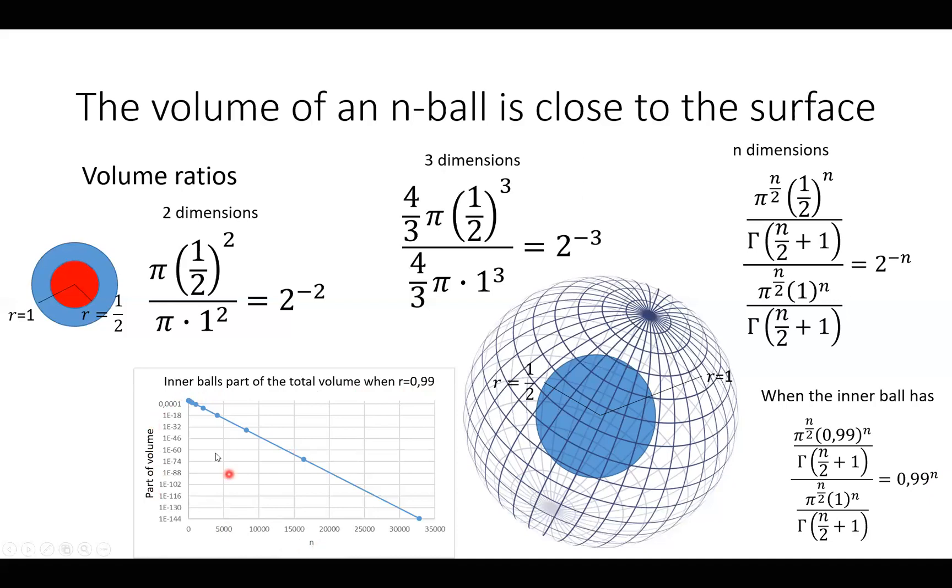And we see as n grows, the part of the volume of the inner ball goes to zero. So all the volume will be close to the surface of an n-ball.